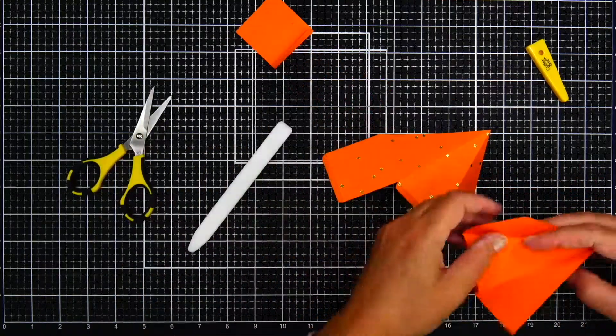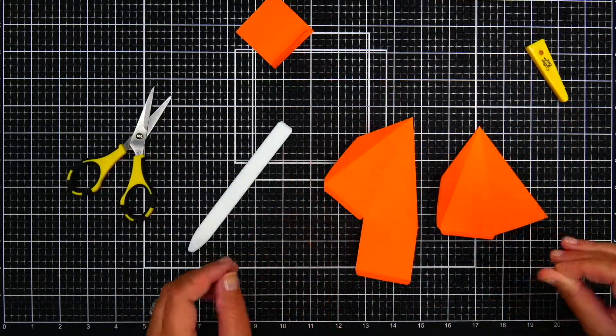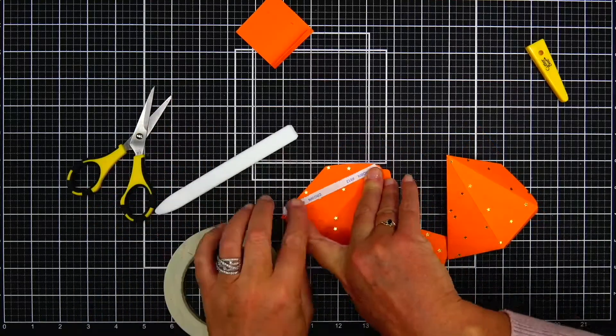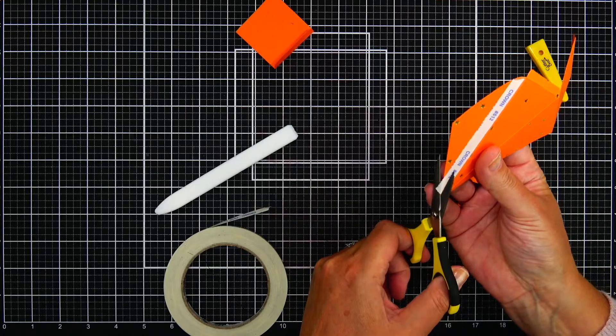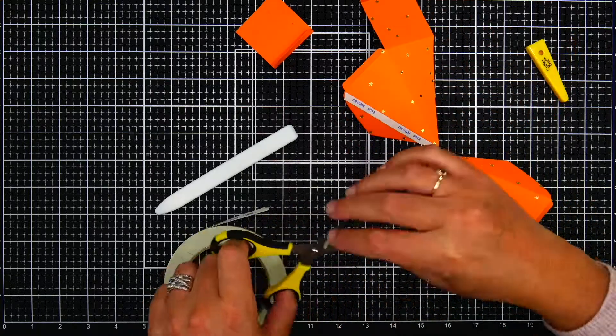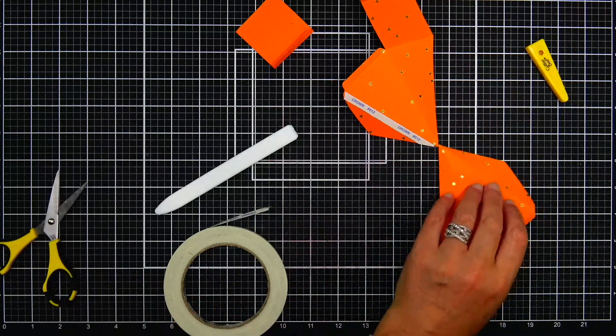Before I start adhering the pieces together, I'm going to be using double-sided adhesive to attach the pieces together. I put the adhesive on the top side of each piece. There's a little triangle flap, and I try to keep the adhesive as close to the score line as I can get.